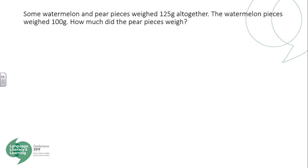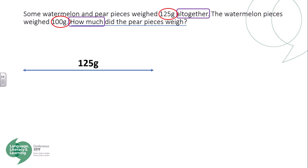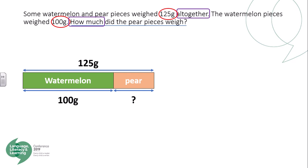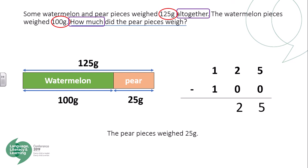Some watermelon and pear pieces weighed 125 grams altogether. The watermelon pieces weighed 100 grams. How much did the pear pieces weigh? We circle the key numbers, underline the question, and box the key maths action words. There were 125 grams altogether, so the watermelon and pear combined had to equal 125 — we have our total. We know the watermelon weighed 100 grams, so we have one part. This is a subtraction problem: 125 take away 100 gives us 25 grams. The pear pieces weighed 25 grams.